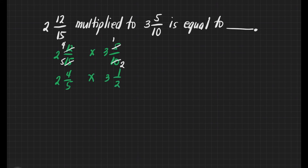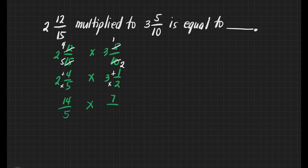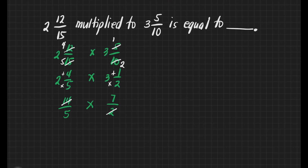These two fractions are mixed numbers, so we must change them to improper fractions first. For 2 and 4 fifths: 2 times 5 is equal to 10, plus 4 is equal to 14, then copy the denominator, which is 5. For 3 and 1 half: 3 times 2 is equal to 6, plus 1 is equal to 7, then copy the denominator, which is 2. Now, is there something that we can cancel? Yes, we can cancel 14 and 2. What number can we divide 14 and 2? That's 2. 14 divided by 2 is equal to 7, and 2 divided by 2 is equal to 1. Are we ready to multiply? Yes. Numerators: 7 times 7 is equal to 49. Denominators: 5 times 1 is equal to 5.